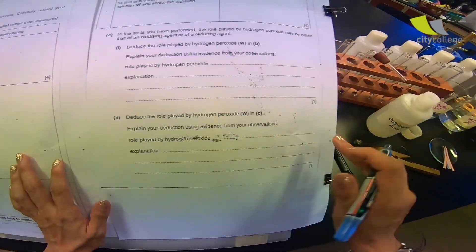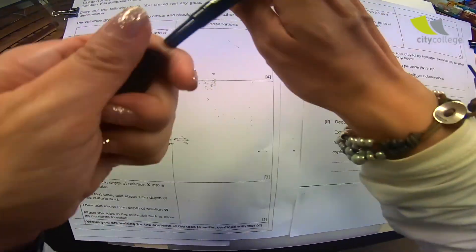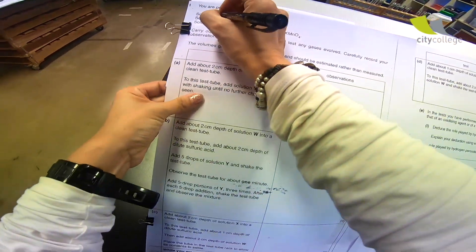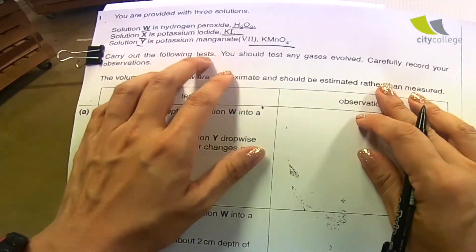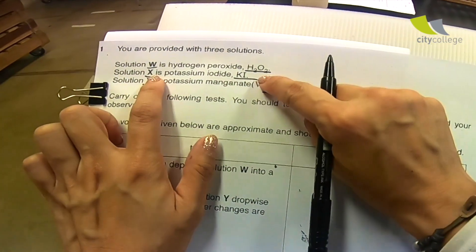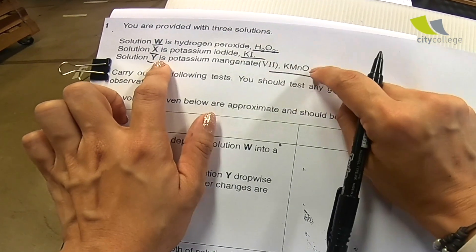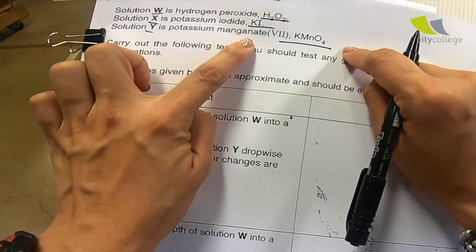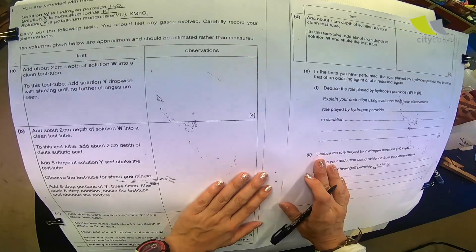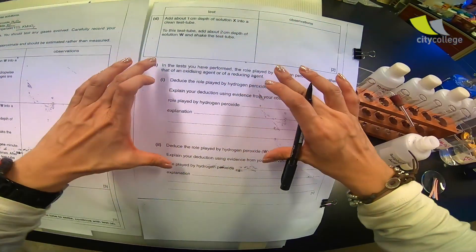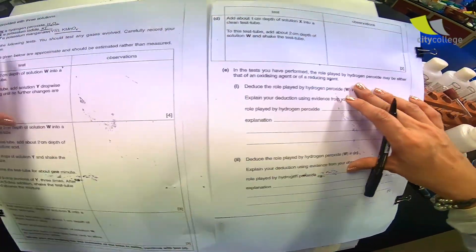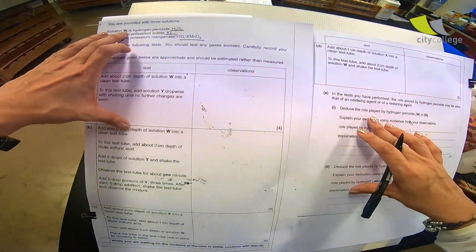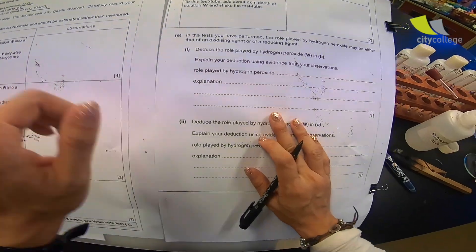But do you notice something very special about this test? First of all, all the solution W, X, and Y, they already gave you who they are. W is hydrogen peroxide, X is KI potassium iodide, and Y is potassium manganate. Usually, for all chem practical, you will be asked to find the unknown. But for this part here, they already gave you all the unknown. So, what exactly are they looking for?